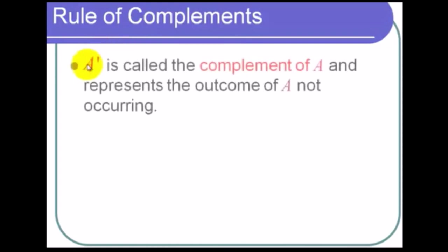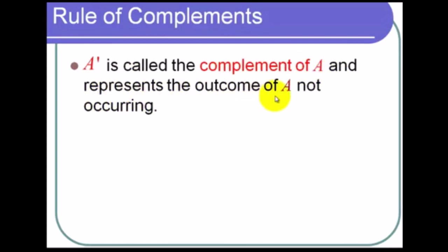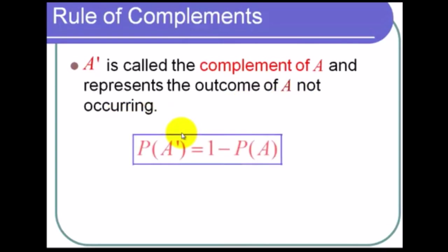The rule of complements. First, let's talk about some symbols used for complements. Sometimes they'll use an A prime, sometimes an A with a C as a superscript, and sometimes an A with a bar on top. There are lots of different symbols. Here I just write A prime and we call that the complement of A. What that means is it represents the outcome of A not occurring. The big rule says that the probability of A not occurring is equal to 1 minus the probability of A occurring.